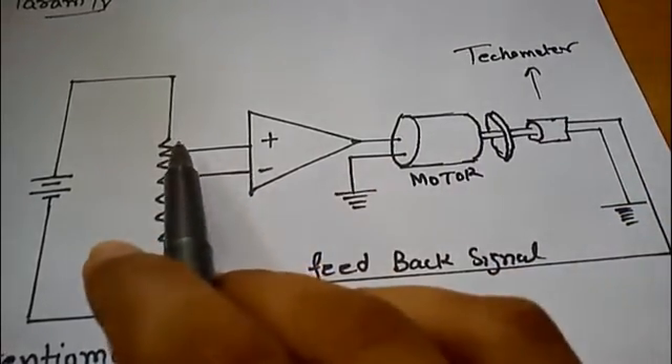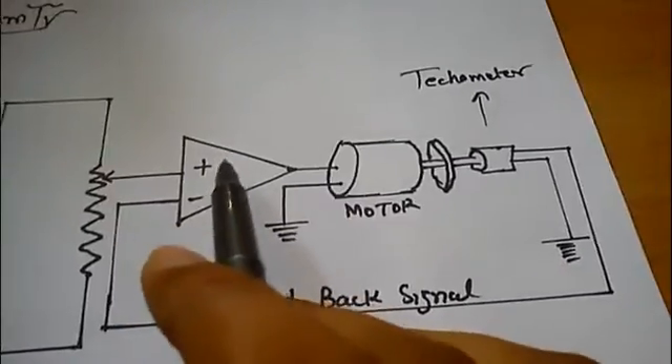In this circuit, we have a potentiometer which provides different voltage signal values according to our requirement to the differential amplifier. The differential amplifier will produce a signal and give the signal to the motor.